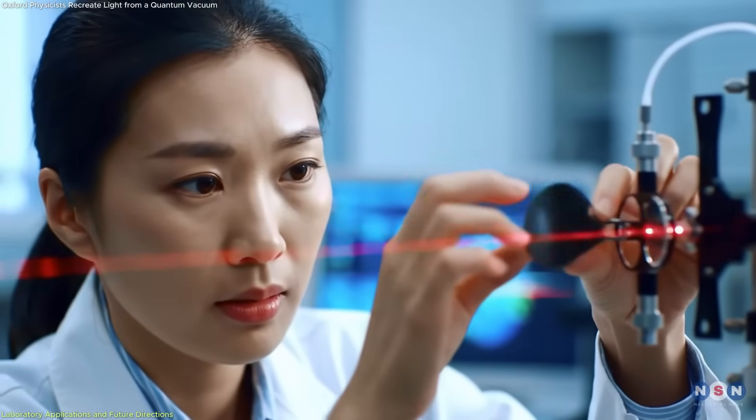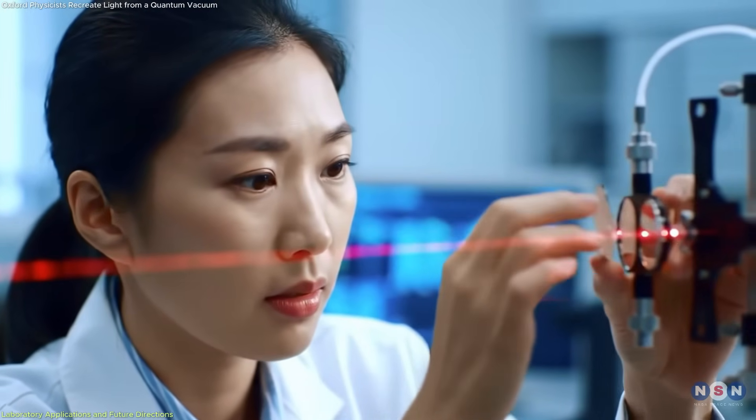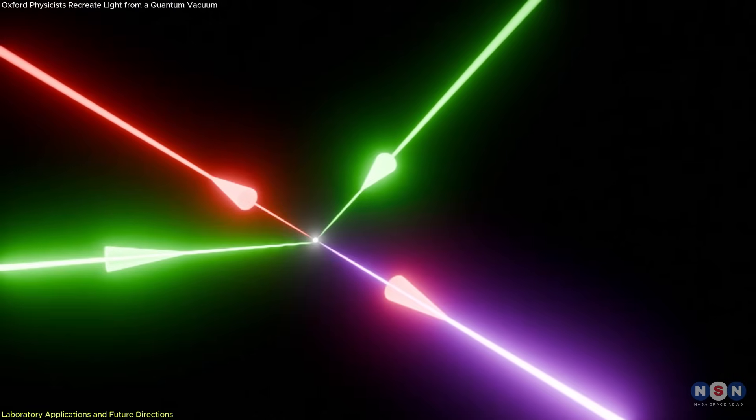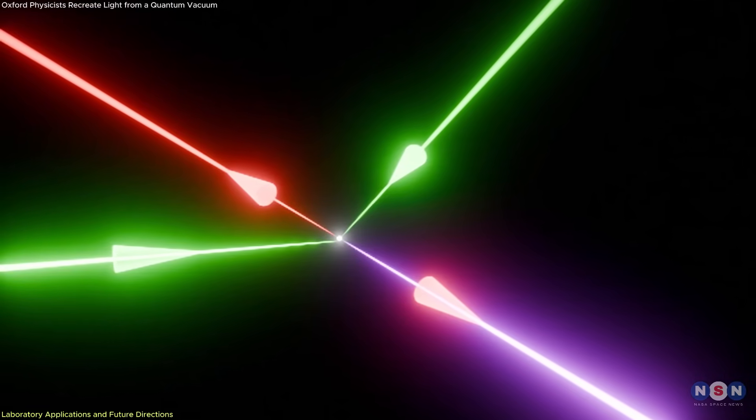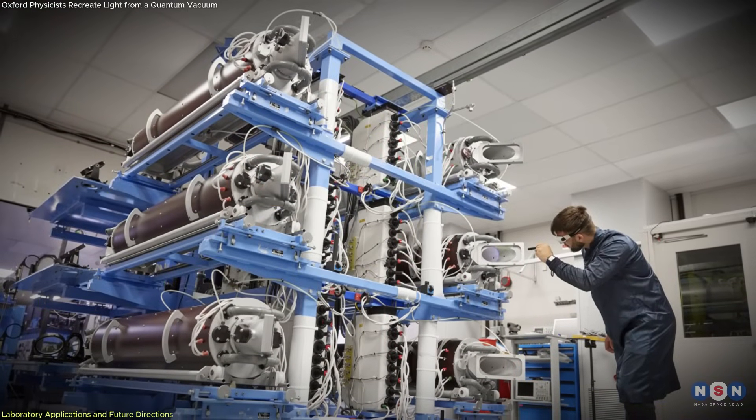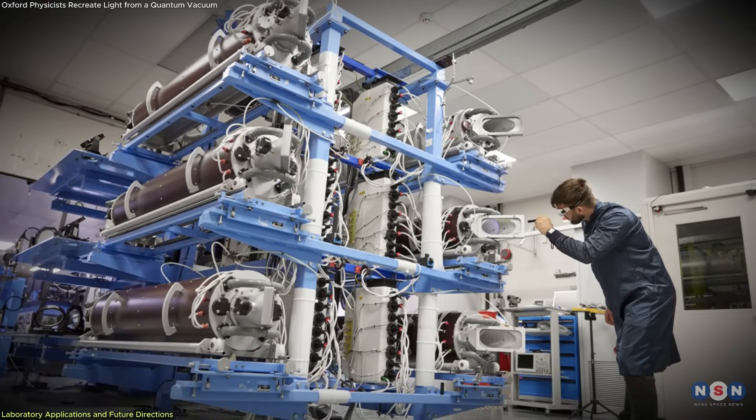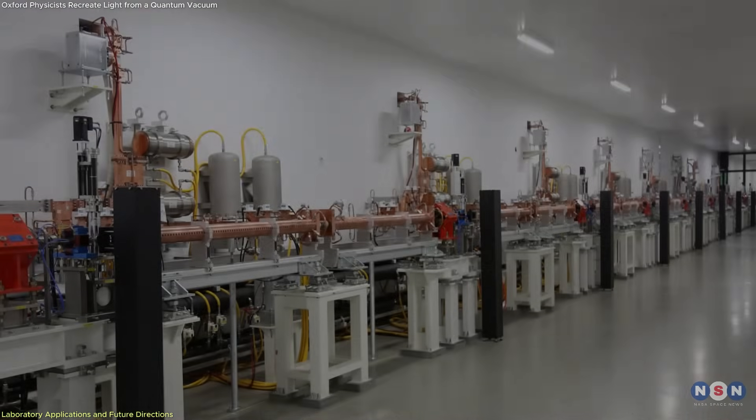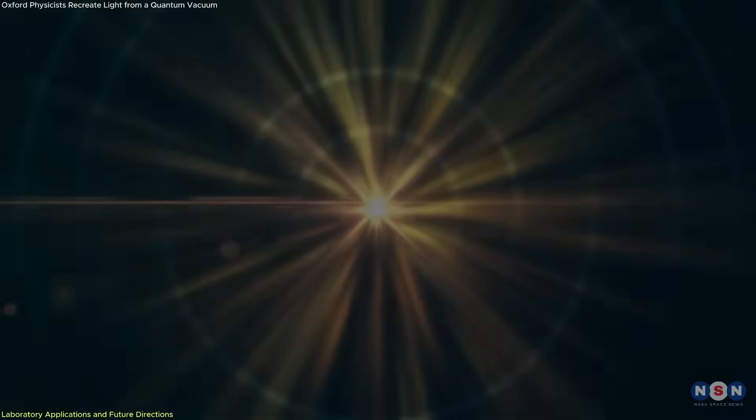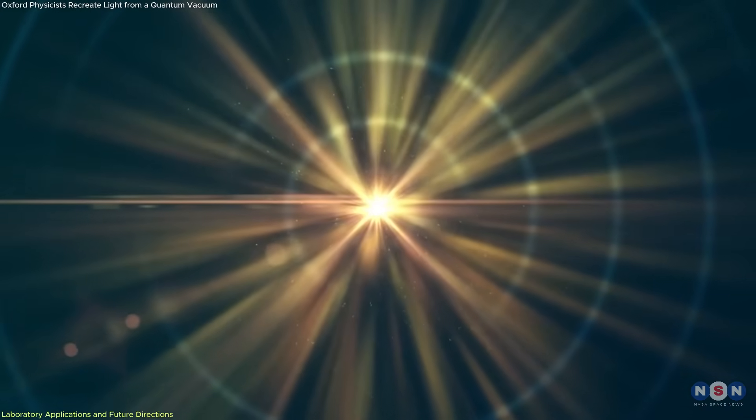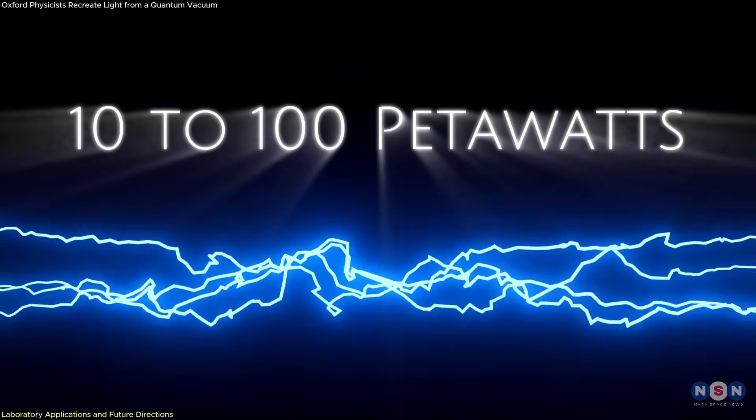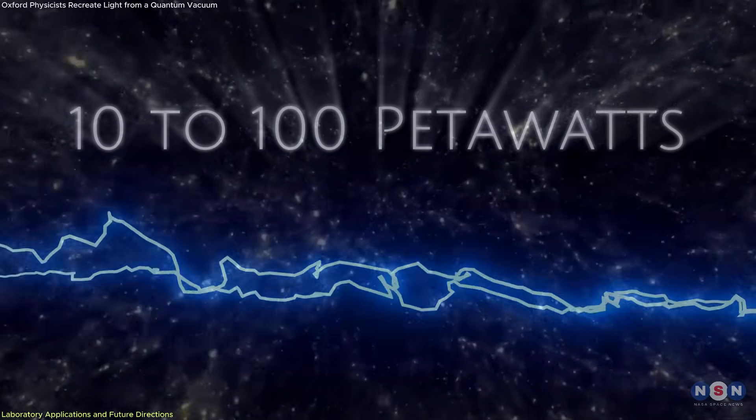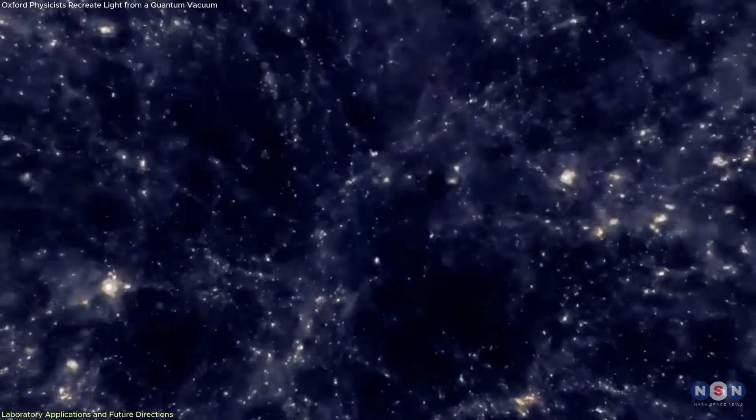New laser facilities now coming online are capable of reaching the field strengths required to replicate these effects experimentally. Among the most advanced are the Vulcan 2020 system in the UK, the extreme light infrastructure in Romania, and Shine in China. These facilities are designed to deliver pulses of light at powers of 10 to 100 petawatts, intensities high enough to alter the vacuum.